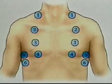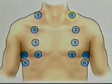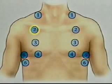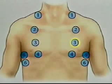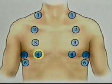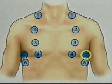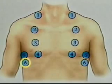To auscultate the anterior chest, take the same systematic approach you used for percussing the anterior thorax. If necessary, gently displace the patient's breasts to auscultate all important areas.